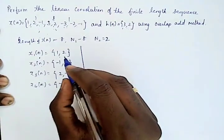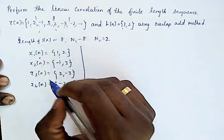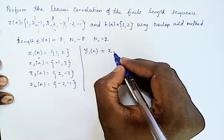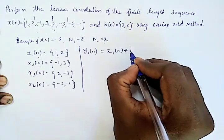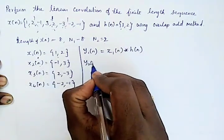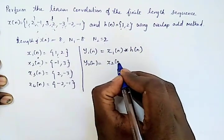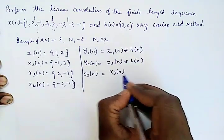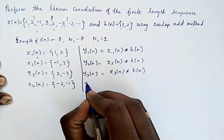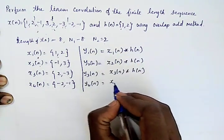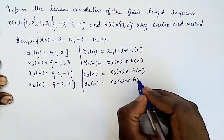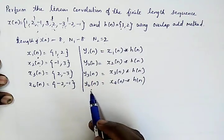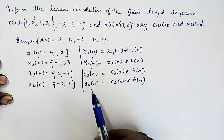The second step is to perform linear convolution for all these subdivided sequences with h[n]. So we need to find: y1[n] = x1[n] convolved with h[n], y2[n] = x2[n] convolved with h[n], y3[n] = x3[n] convolved with h[n], and y4[n] = x4[n] convolved with h[n].